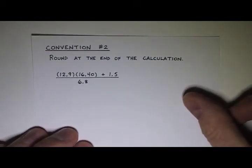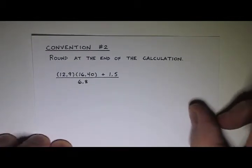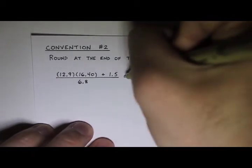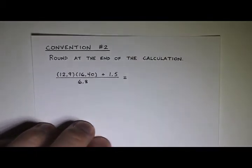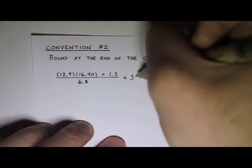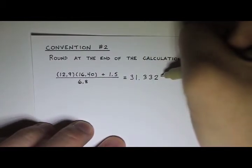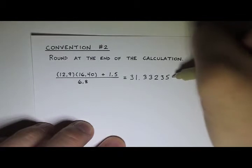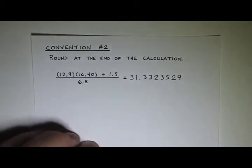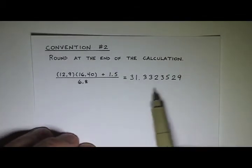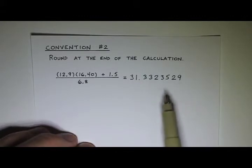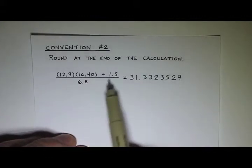Convention two is you do the calculation all in one step, and then you round it at the end. This one's a little bit easier. If you just type this into a calculator, you would end up getting 31.3323529. Now you would never write all these numbers out. That just wouldn't make sense here for the size of the numbers that we have in the problem.